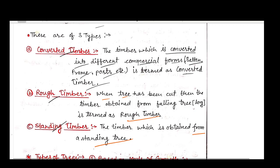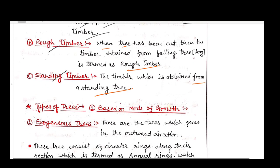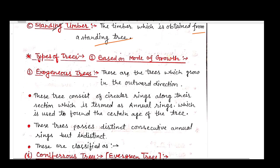Trees are classified based upon their mode of growth. First is the exogenous tree. Here the word 'exo' means growing in an outward direction, so these trees grow outward, meaning the bark at the outermost is the newest and the innermost is the oldest. These trees consist of circular rings.